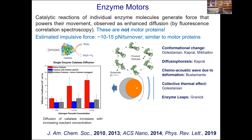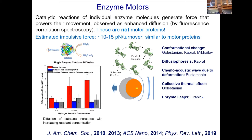We showed that enzymes in catalyzed reactions produce mechanical energy. The chemical energy from catalysis is converted into mechanical motion, which can manifest as enhanced diffusion. You can do a back-of-the-envelope calculation—it's about 10 to 15 piconewtons per turnover. These are not motor proteins; these are just free-floating enzymes. Diffusion increases with increasing substrate concentration, directly tied to the reaction rate and the free energy change.